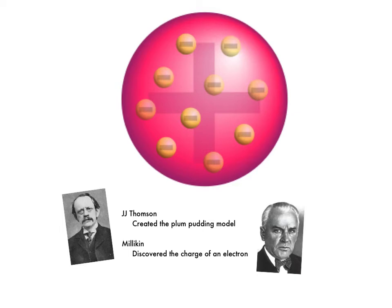In 1904, Thompson composed a model of an atom and represented it as a sphere of positive matter with electrons positioned based on electrostatic forces. This became known as the Plum Pudding Model.